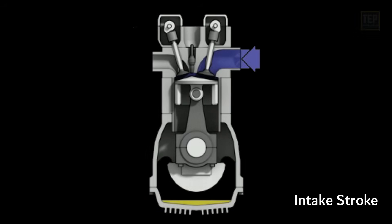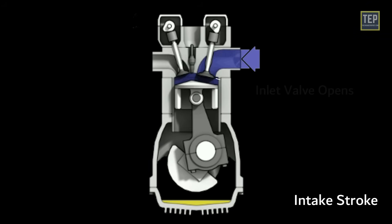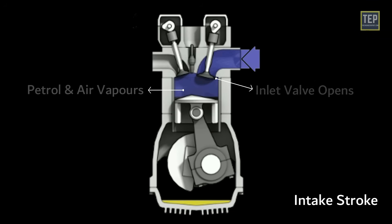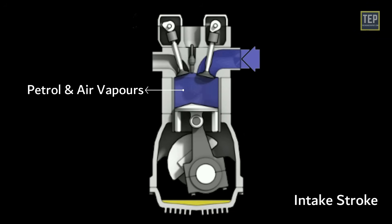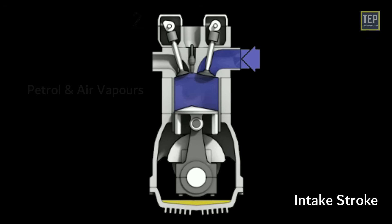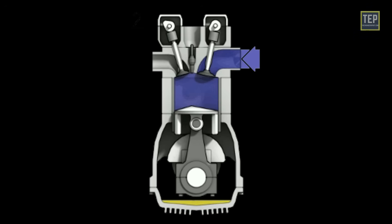Intake stroke: The stroke begins when the piston is at TDC (top dead center). The piston moves downward and the inlet valve opens. A mixture of petrol and air vapors, mixed proportionally by the carburetor, enters the cylinder and fills the space. The piston reaches its lowest position, known as BDC (bottom dead center).